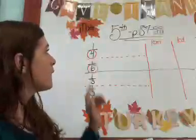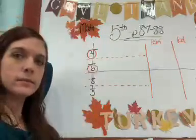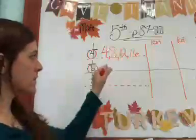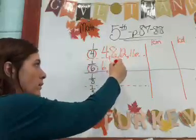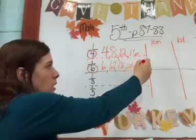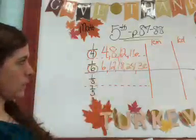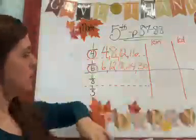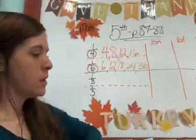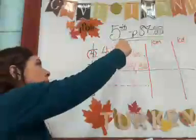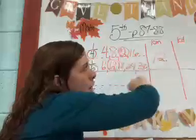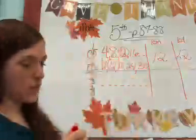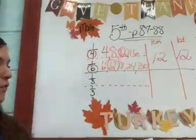Give me some multiples of 6, Ethan. 6, 12, 18, 24, 30. What is my least common multiple then? 12. So you put 12 right here. Now, what's my least common denominator, Danielito? 12. Because we just said that they're both the same. That's how they got the answer for letter A.